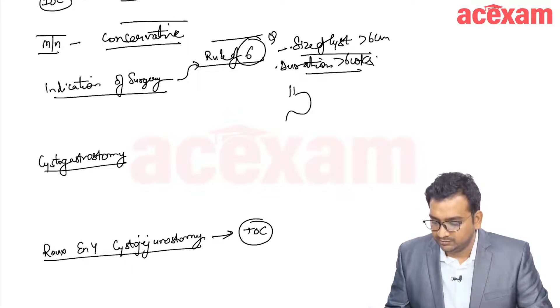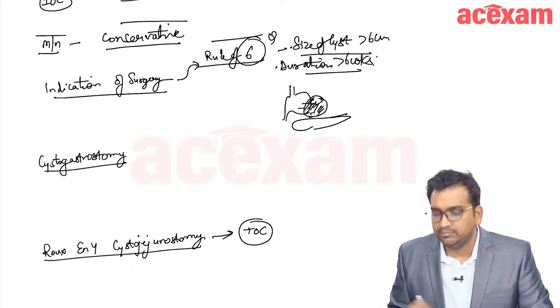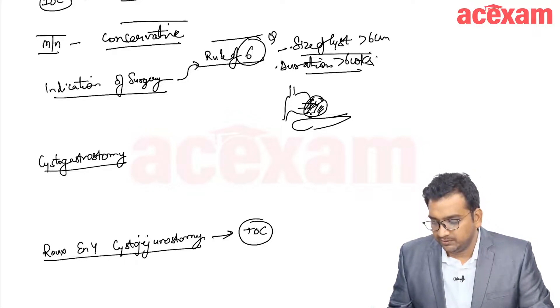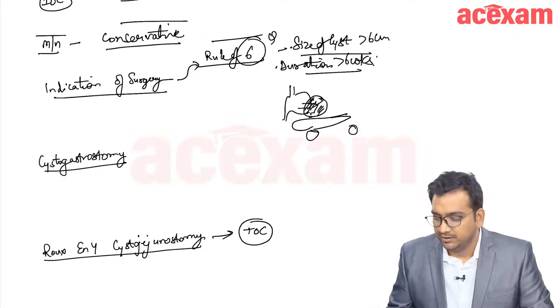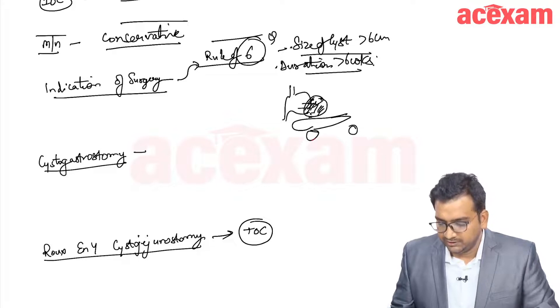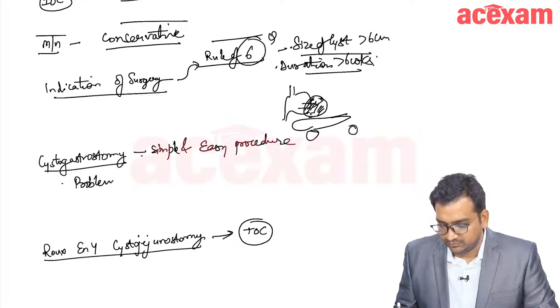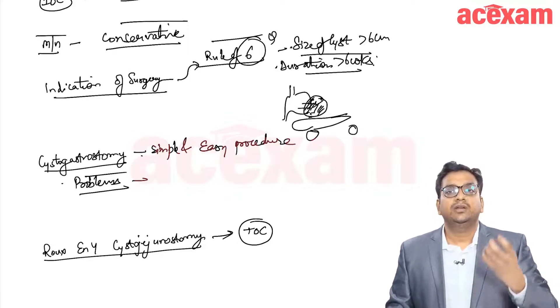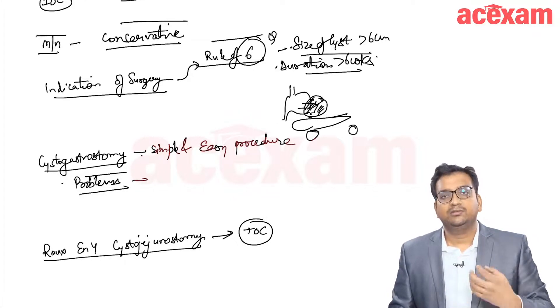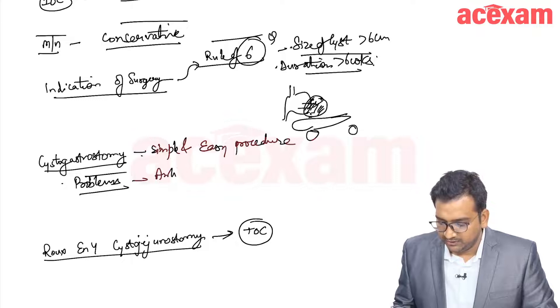Cystogastrostomy, I will first explain. Suppose this is stomach, this is pancreas. Here there is a lesser sac and there is a large cyst here. If the cyst is abutting the posterior wall of stomach, then we can go ahead with cystogastrostomy. The advantage with cystogastrostomy is it is simple and easy procedure or quicker procedure. The problem is, normally if the patient is lying down, stomach is anterior and cyst is posterior, so the drainage is anti-gravity.